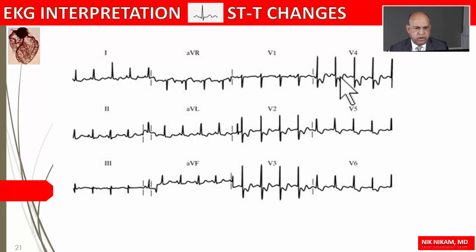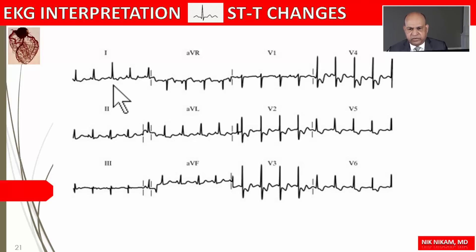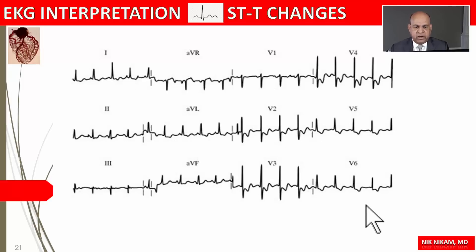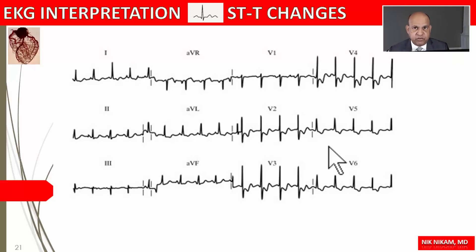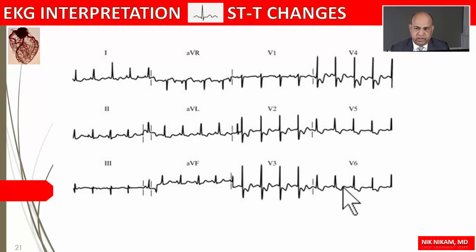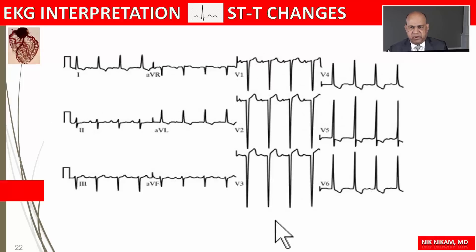Here we have ST depression noted in the anterior leads V2, V3, V4 and also in V5 and V6, as well as in lead I and aVL, showing evidence of generalized ST-T changes. We don't see classic evidence of left ventricular hypertrophy or bundle branch block or conduction disturbances. In the absence of other conditions causing ST depression, we should consider subendocardial myocardial ischemia. If these changes are new, associated with chest pain and elevated cardiac enzymes, they may represent non-transmural MI.